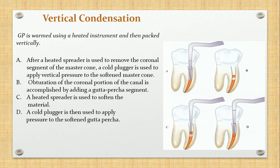Vertical condensation: gutta-percha is warmed using a heated instrument and then packed vertically. After a heated spreader is used to remove the coronal segment, a cold plugger is used to apply vertical pressure to the softened gutta-percha segment. A heated spreader softens the material and a cold plugger is then used to apply pressure to the softened gutta-percha.